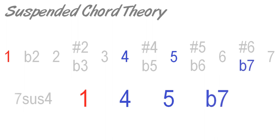We can also add a minor 7th to suspended fourth chords to enhance its harmonic effect. In styles such as jazz, blues, soul and funk, the suspended fourth chord is often extended. One example of this is a dominant 9 sus4 chord.